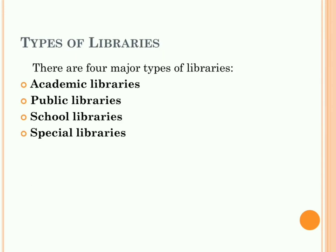Now we learn about the types of libraries. There are four types of libraries: first, academic libraries; second, public libraries; third, school libraries; and the fourth one is special libraries. Now I will tell one by one about all libraries.